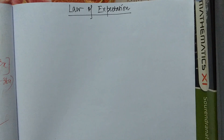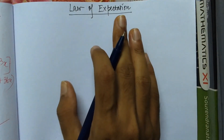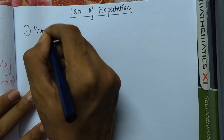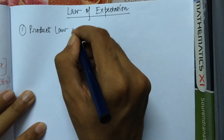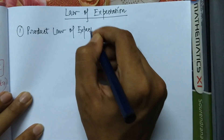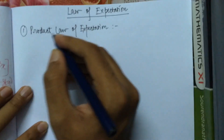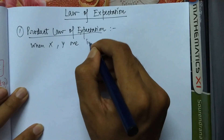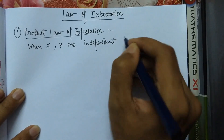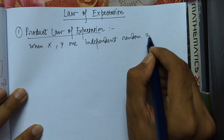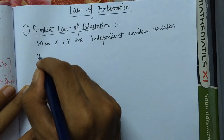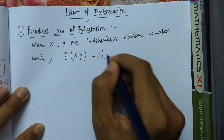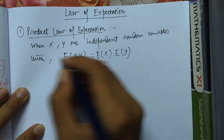Hello everyone. Today our topic of discussion is the Law of Expectation. We will first prove the Product Law of Expectation, which states that when X and Y are independent random variables, then E[XY] equals E[X] times E[Y]. This is what we have to establish.